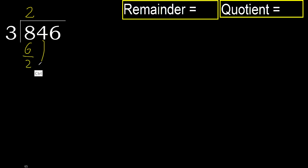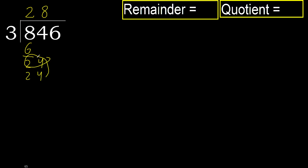Subtract, next: 24. 3 multiplied by 9 is 27 — greater. Multiplied by 8, 24 is not greater. Ok.